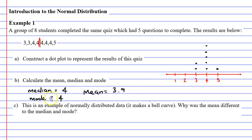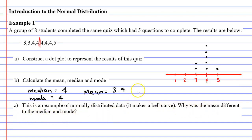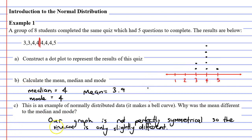And that's okay — that's normal. Question C says: this is an example of normally distributed data, meaning it makes a bell curve. Why was the mean different to the median and mode? Well, as we just said, it's not perfectly symmetrical. So our graph is not perfectly symmetrical, so the mean is only slightly different.